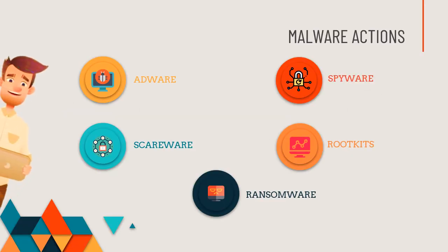Malware actions include adware, spyware, scareware, rootkits, ransomware, etc. These are the various malware actions. So we have seen the types of threats to a particular network: software attacks, identity theft, denial of service attacks, and cyber crimes.